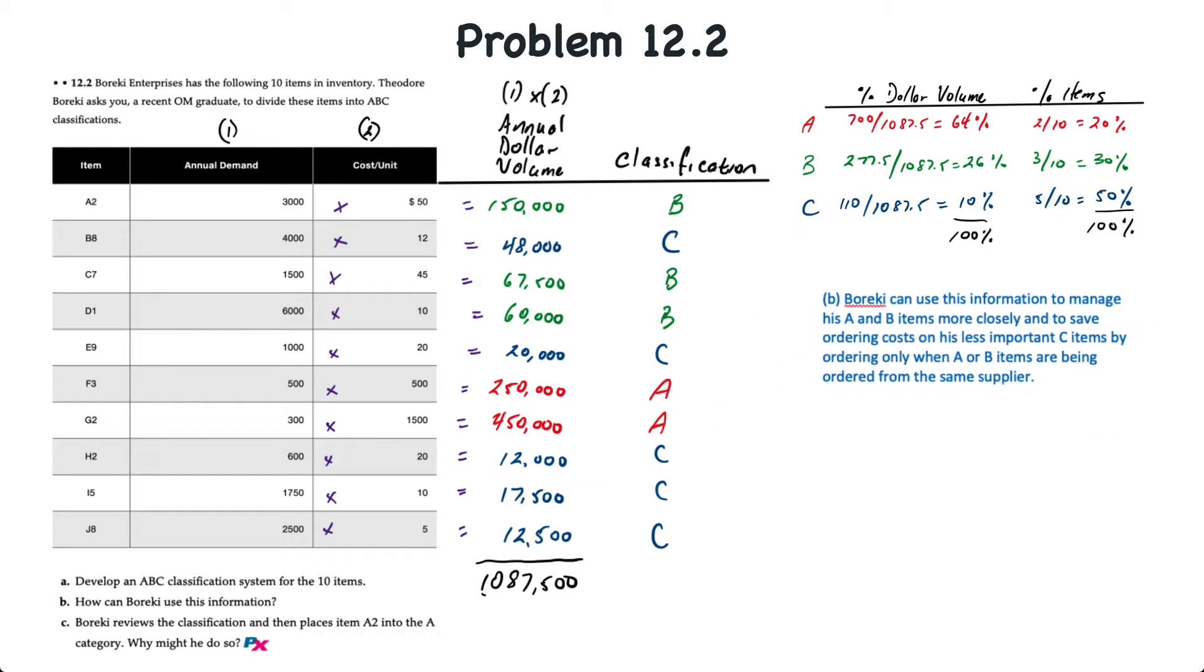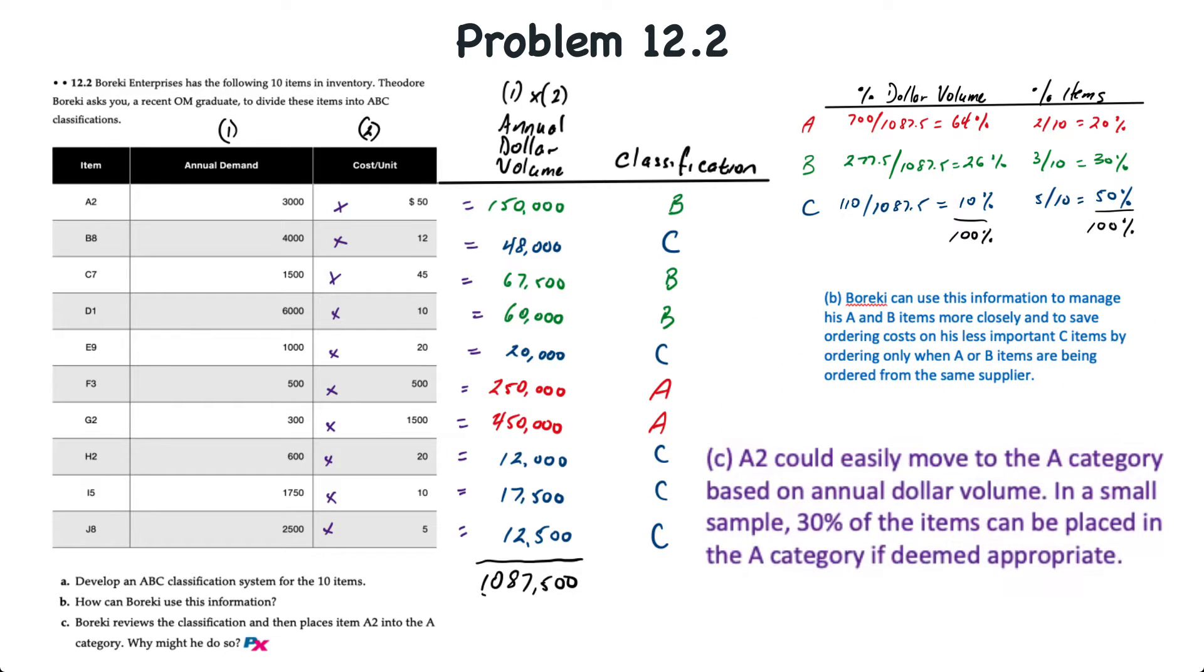For part C, the manager reviews the classification and decides to place item A2 in the A-level category. Why might he do that? Well, when we were working through it, we identified that there was a big gap between F3 and A2 and decided to classify A2 as a B-level item.